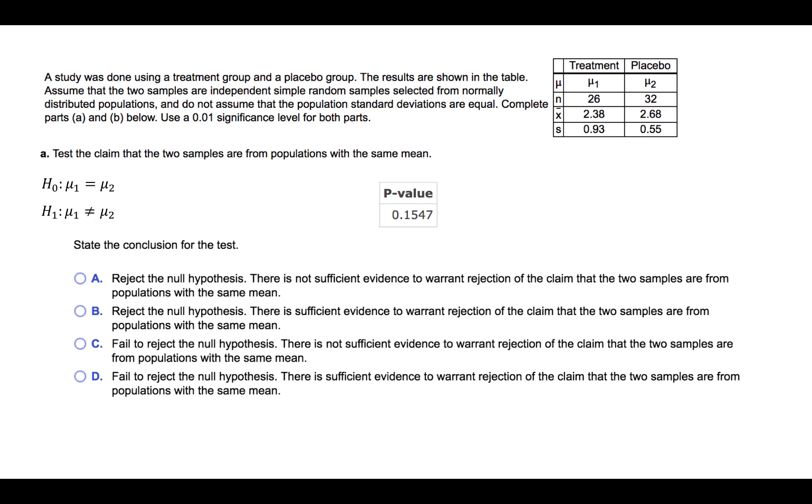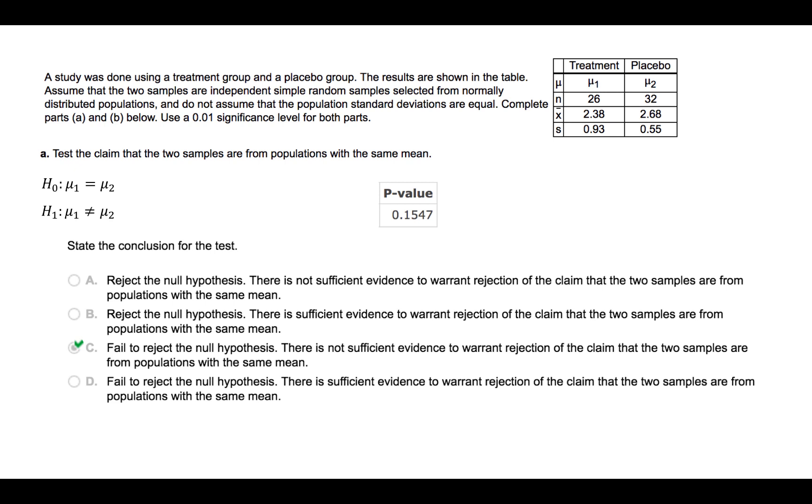In other words, sufficient evidence was not gathered so that we should reject the null hypothesis in favor of the alternative hypothesis. So our correct selection should be C, fail to reject the null hypothesis. There is not sufficient evidence to warrant rejection of the claim that the two samples are from populations with the same mean.